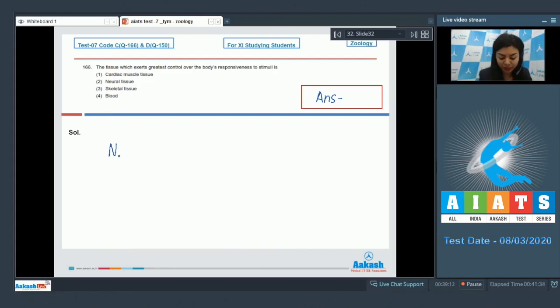The neurons in the body are specialized cells which can transmit various signals. This helps to regulate the complex functionalities in a body and also regulate the body's responsiveness to various stimuli. Thus, the right answer would be option number 2 here.